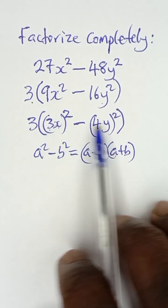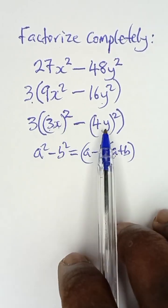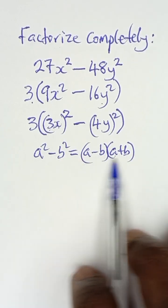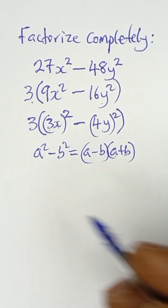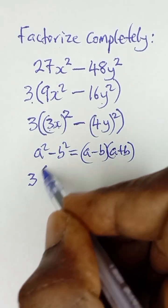Just like we express here, 3x² minus 4y². Now for us to factor this, we are going to express it in this form because it's a difference of two squares. So the 3 that is outside the bracket, I introduce it here.